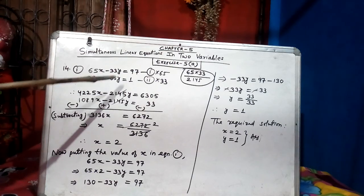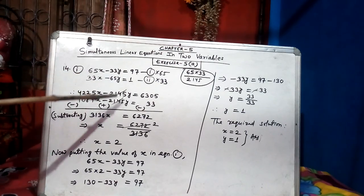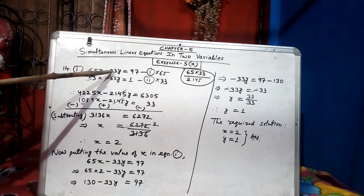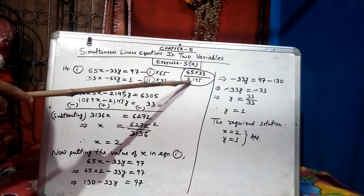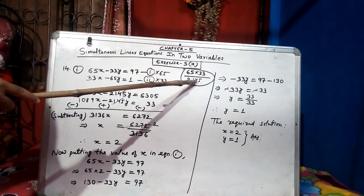Here I am targeting to cancel y variable, that's why I will have to do LCM of 33 and 65. LCM of 33 and 65 is 2,145.